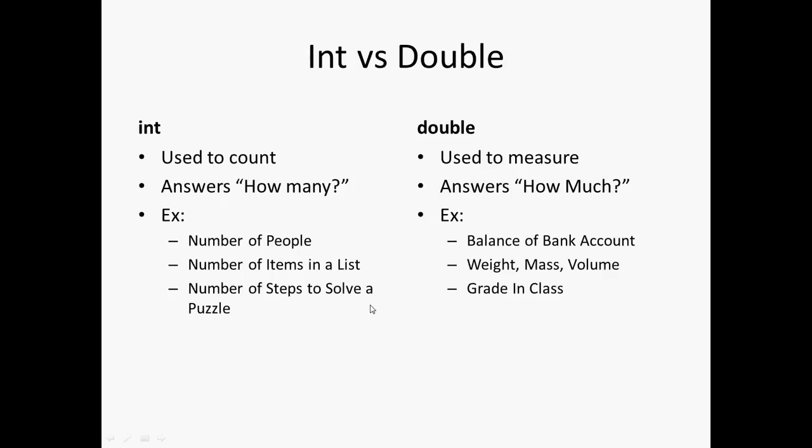So a quick comparison and contrasting of integers and doubles. Integers are used to count. They answer the how many question, how many people, how many cars on the road, how many bricks to build the building, how many items. And this is a common usage that you'll see in programming a lot. Number of people, number of items in a list. Those will also be called arrays. You'll see those in the future. And then the number of steps to solve a puzzle. Another word for puzzle that I just kind of threw out there. You could almost think of it as an algorithm.